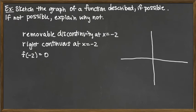Looking at this next one, we have the exact same directions. We're looking this time not for a jump discontinuity, but a removable discontinuity at x equals negative 2. We want not left continuous, but rather right continuous at x equals negative 2. And we have a different function value: f of negative 2 is 0.